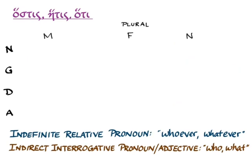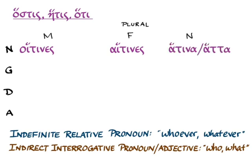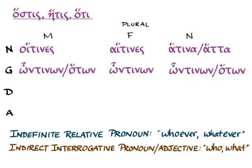Now let's decline this word in the plural. Nominative: οἵτινες, αἵτινες, ἅτινα, or the alternate form ἅττα. Genitive: ὧντινων or the alternate form ὅτων, ὧντινων, ὧντινων or ὅτων in the neuter.